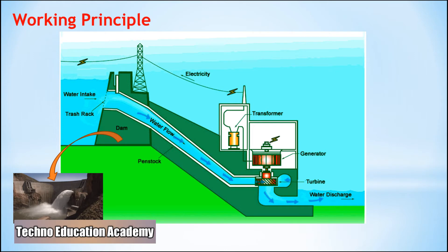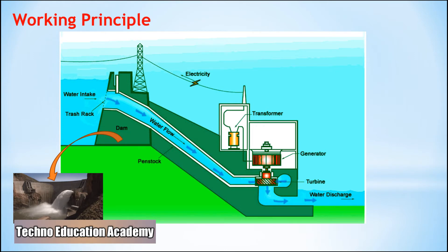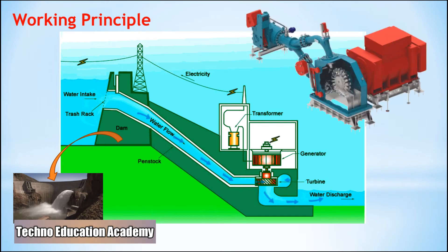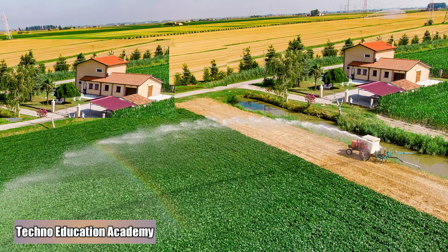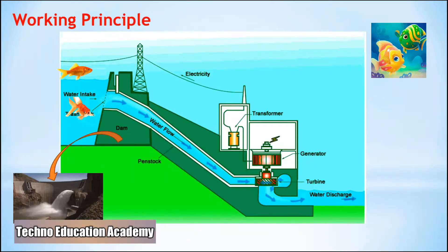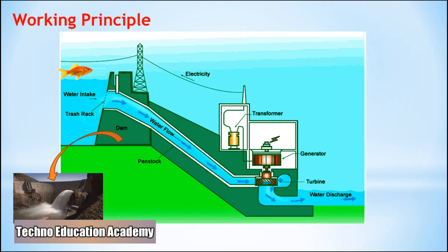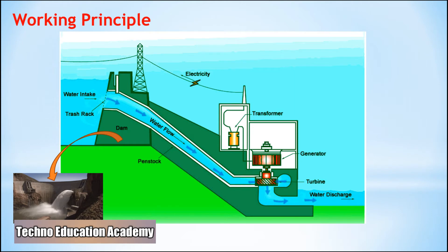An elevation difference is generated by the dam. Potential energy is energy due to elevation or height difference, and we can convert this potential energy into kinetic energy by rotating the turbine wheels. Dams are also used for controlling floods and storing water for irrigation. The dam should be watertight and should withstand the pressure exerted by the water.